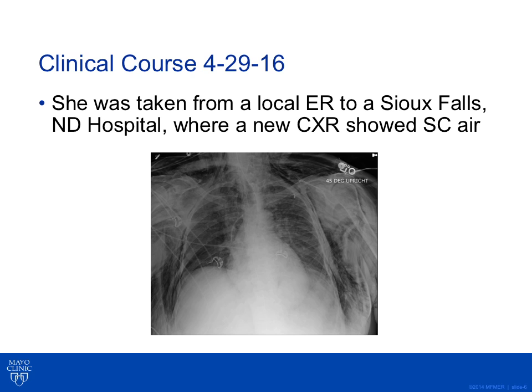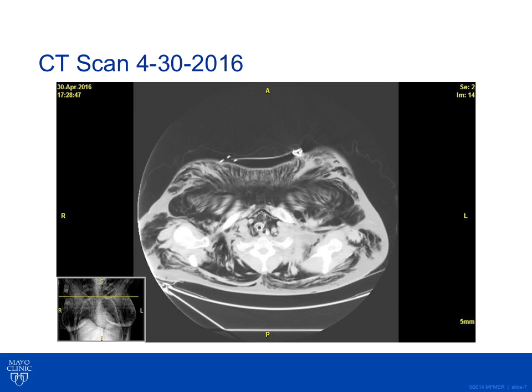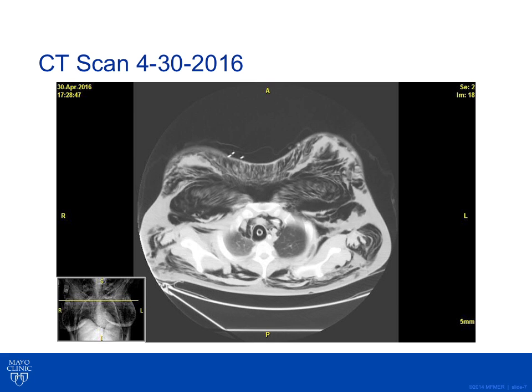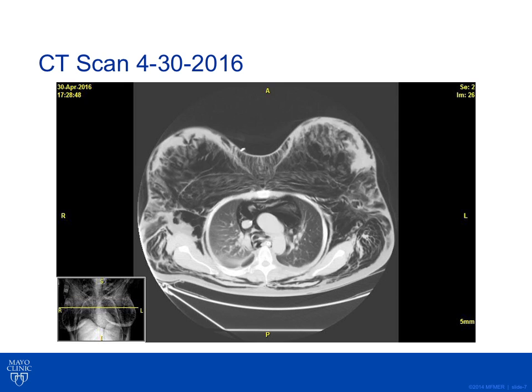She was taken from a local emergency room to a bigger hospital in North Dakota, where a new chest X-ray demonstrated subcutaneous air. The malposition of the endotracheal tube was questioned at that time, and the patient began to have respiratory distress. A CAT scan was performed at the outside hospital.